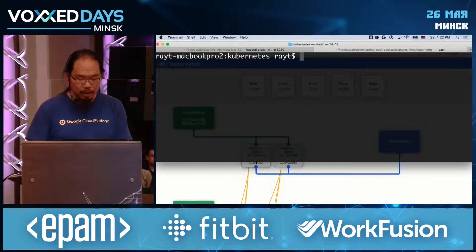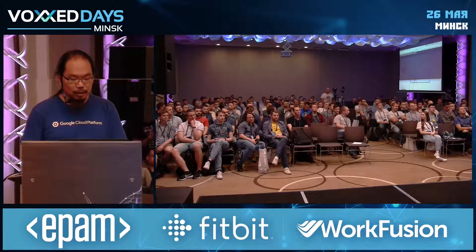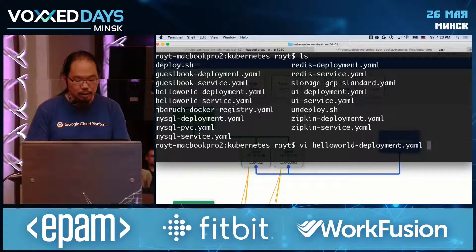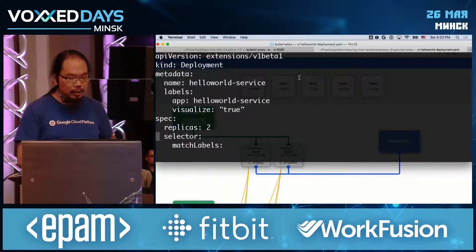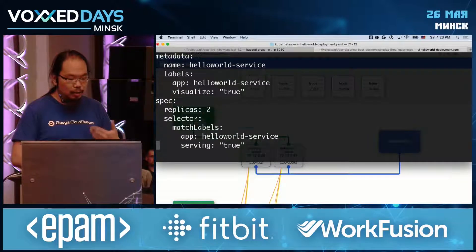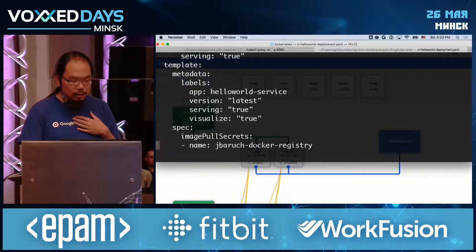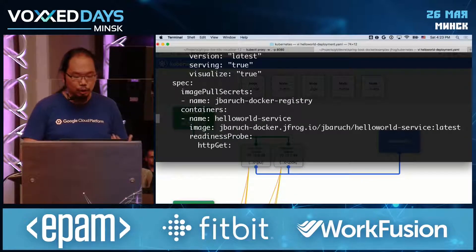How many people here have used Kubernetes before? Very few people — that's alright. In Kubernetes, when we deploy something, all the deployments are written as declarations in a YAML file or a JSON file. I can write a very simple descriptor that actually deploys my application — my Hello World service, for example. All I need to say is how many instances I want and the image I want to use.